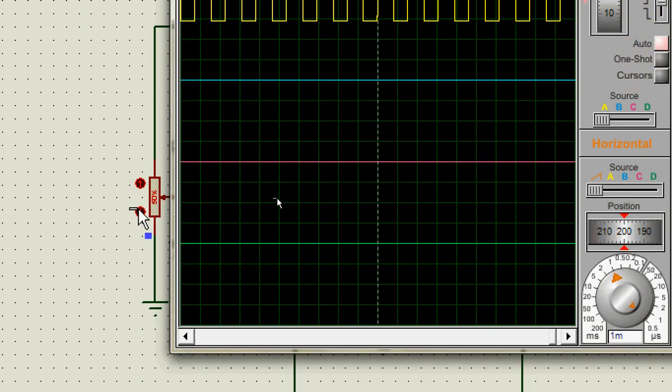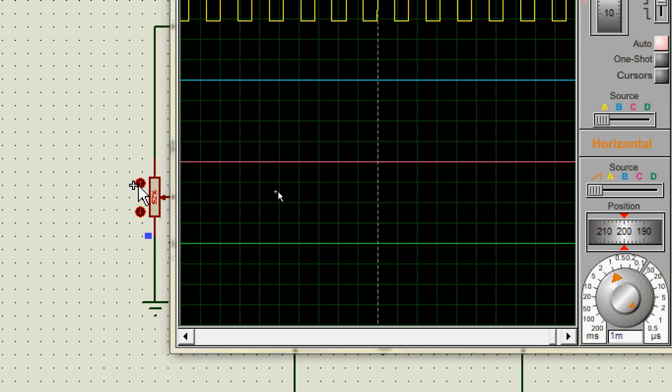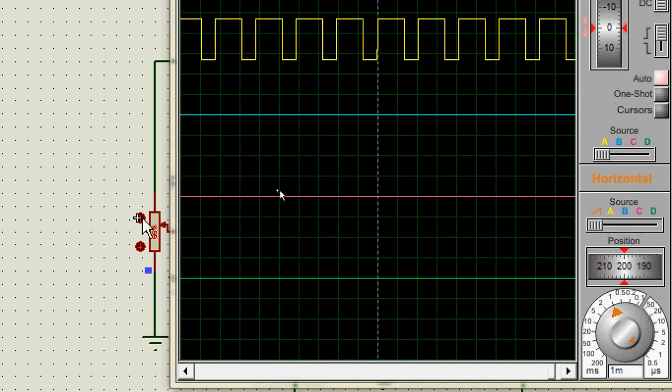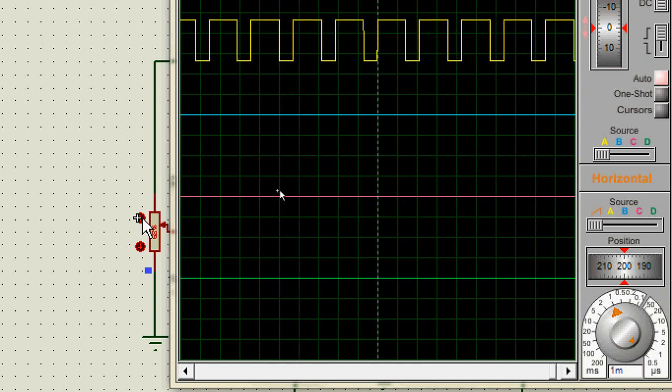This will give us a variable resistor that we can control in real time. Just ground the other end. Let's see what happens when we run the circuit. Let me increase the voltage at pin 5.